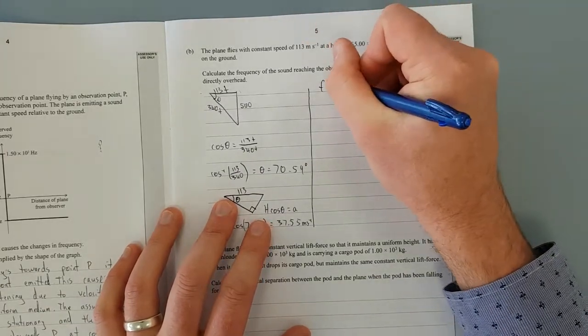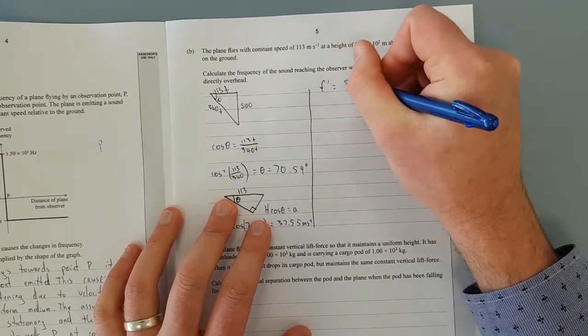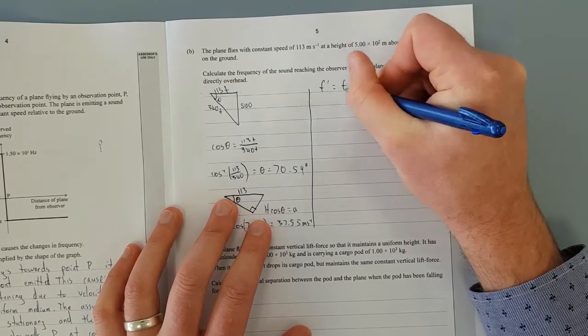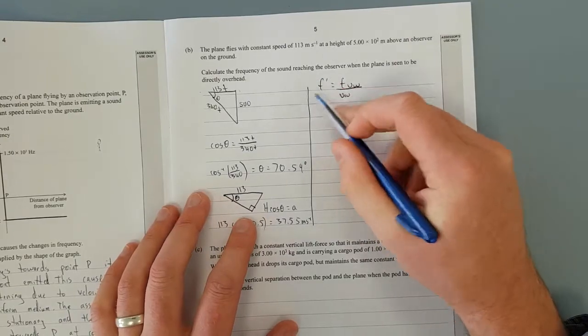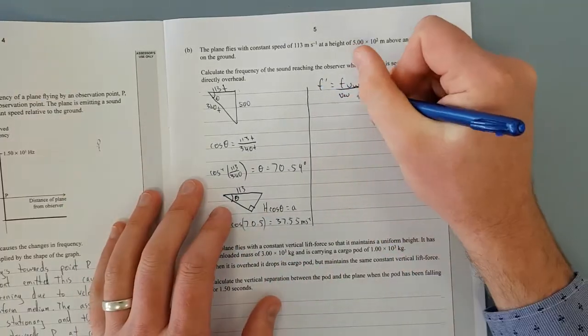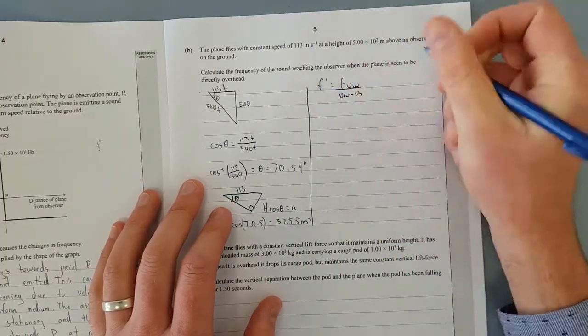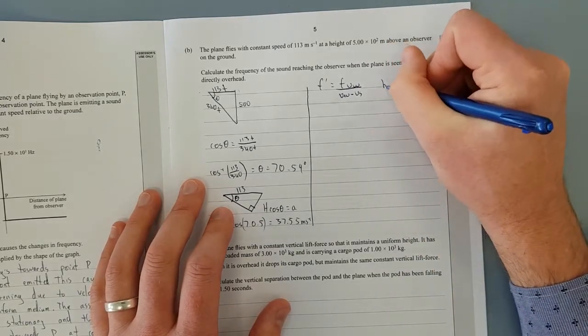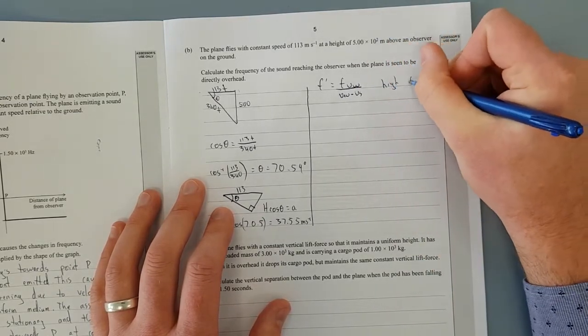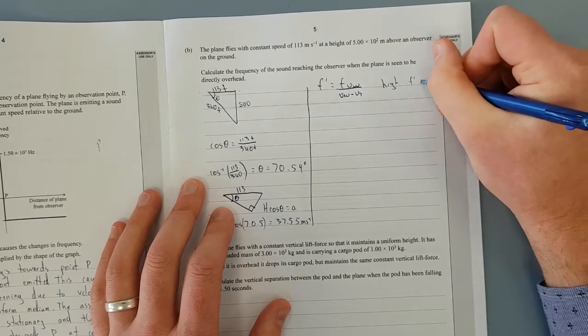So you just substitute that straight back into the regular Doppler formula which is going to be f dash equals velocity of the wave over velocity of the wave. And now we know that the frequency is going to be high because it's coming towards, it's going to be minus the velocity of the source and that'll give us a high f dash expected.